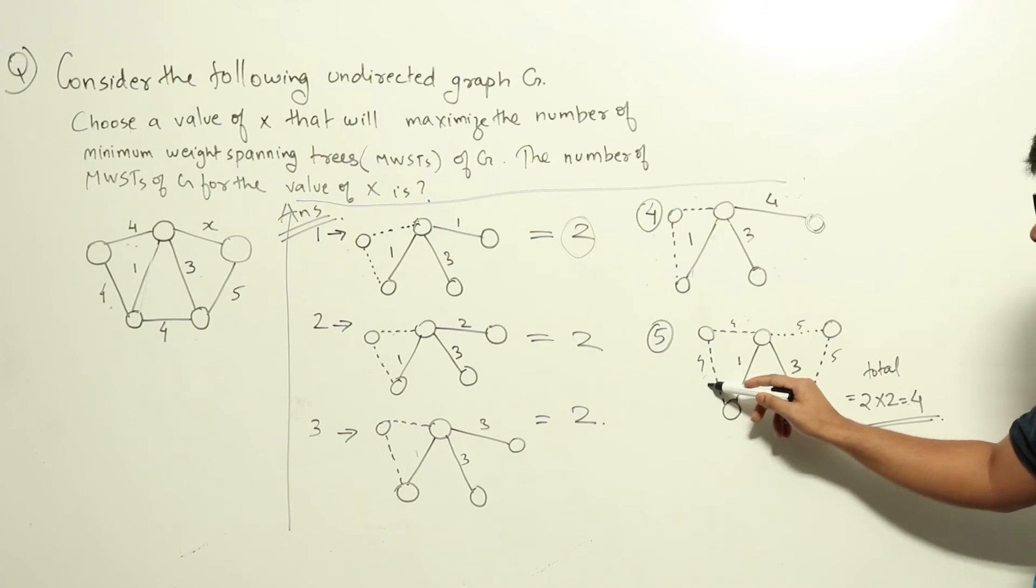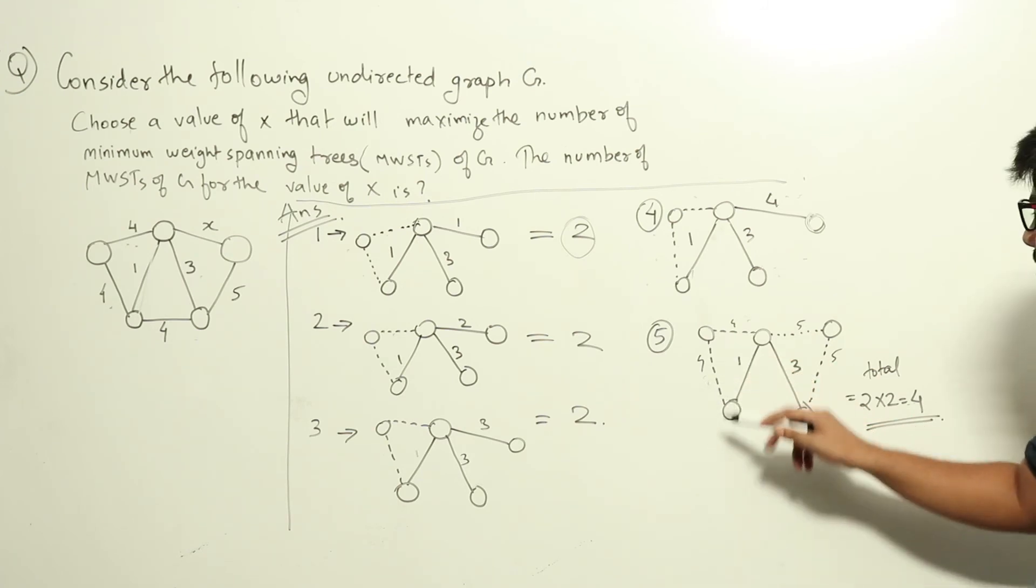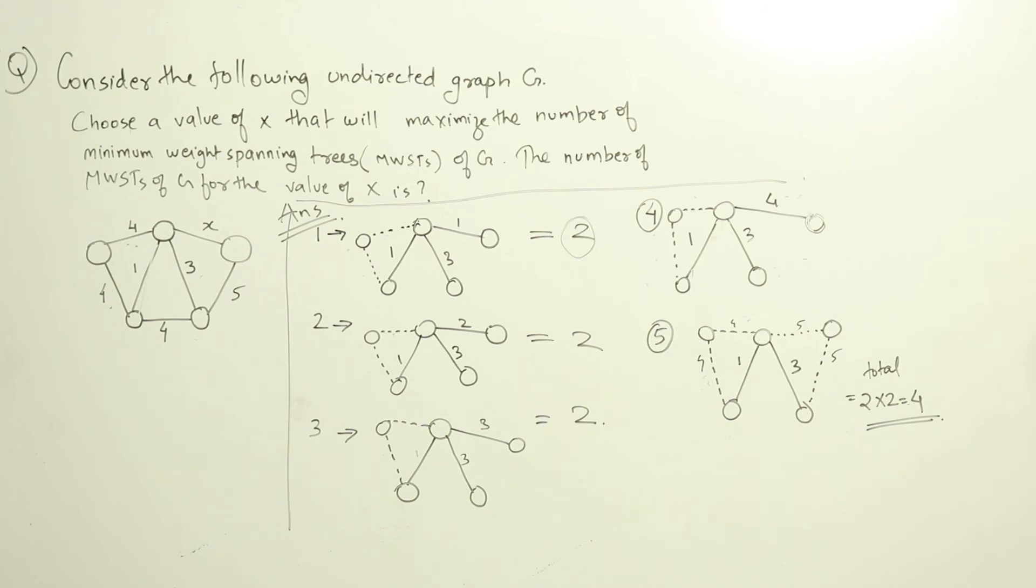After that we don't have to choose the other node. Even though 4 is the next smallest value, we don't need it because it is connecting only the same nodes which is already there in the graph.